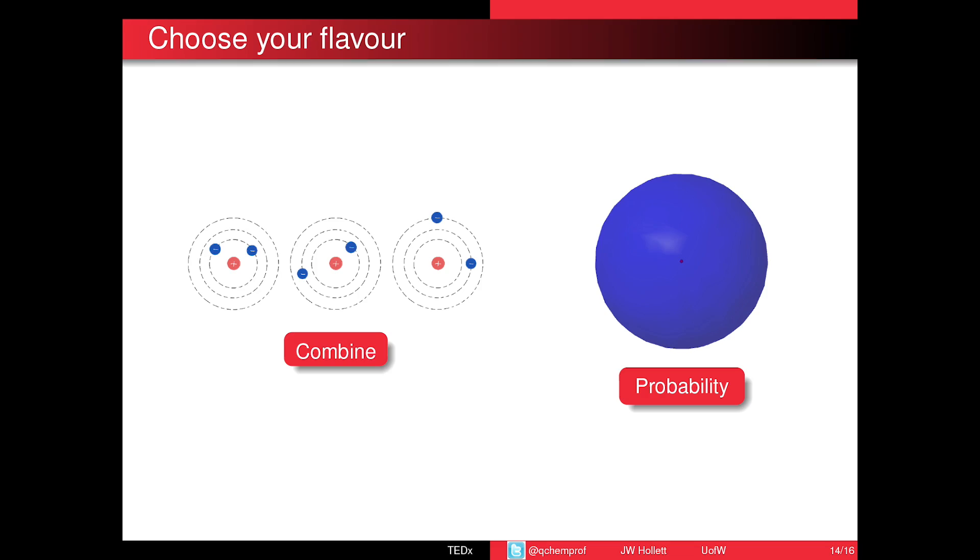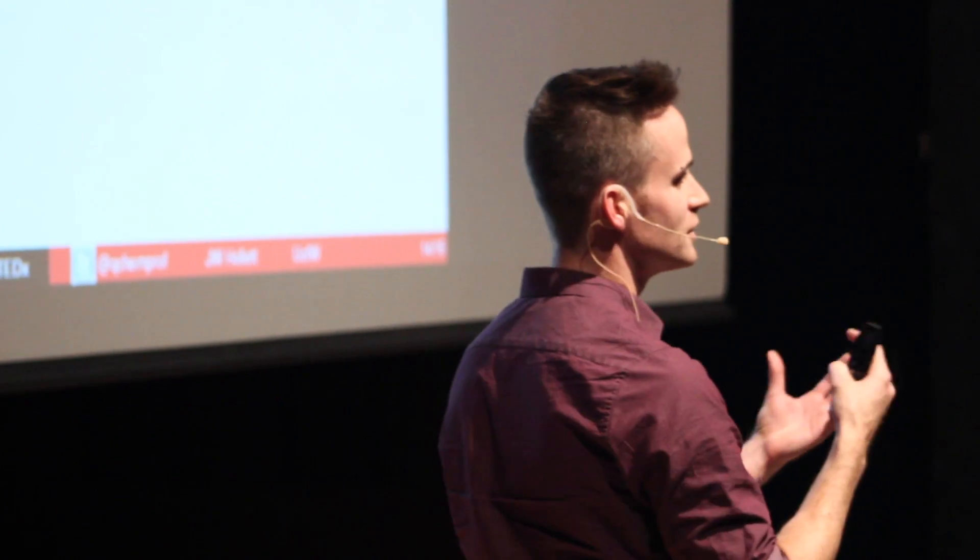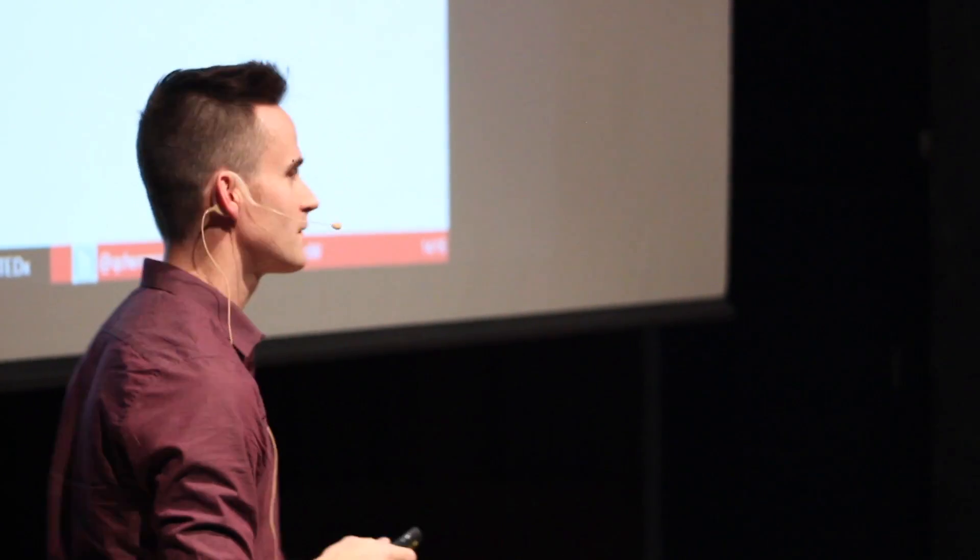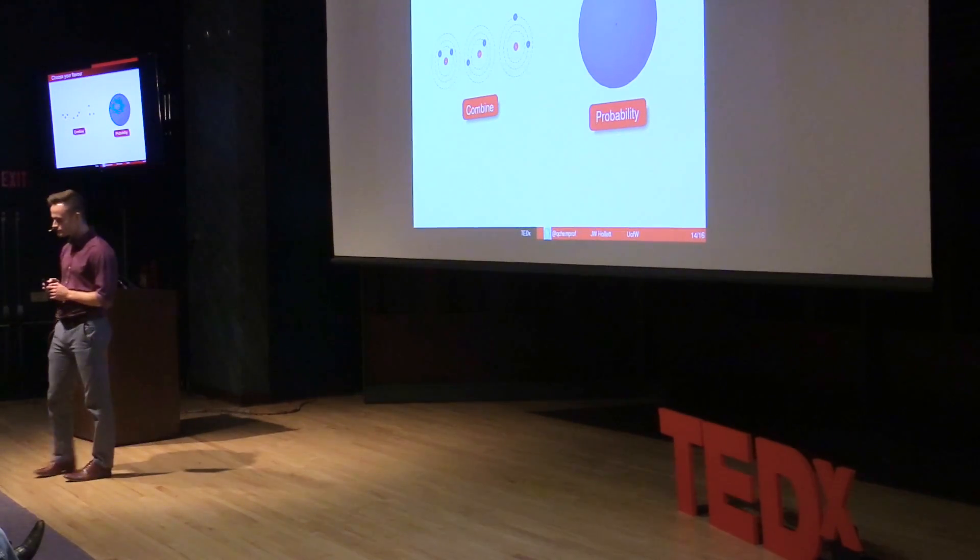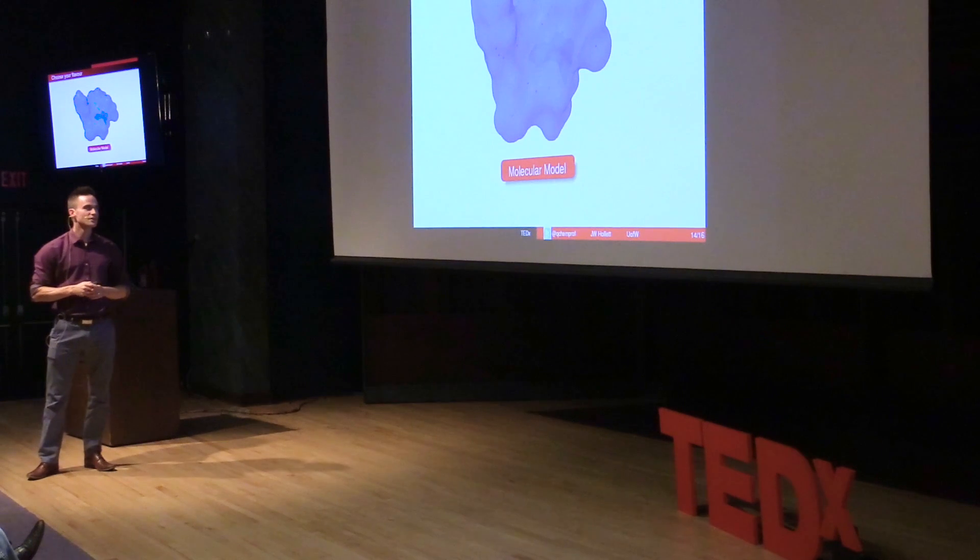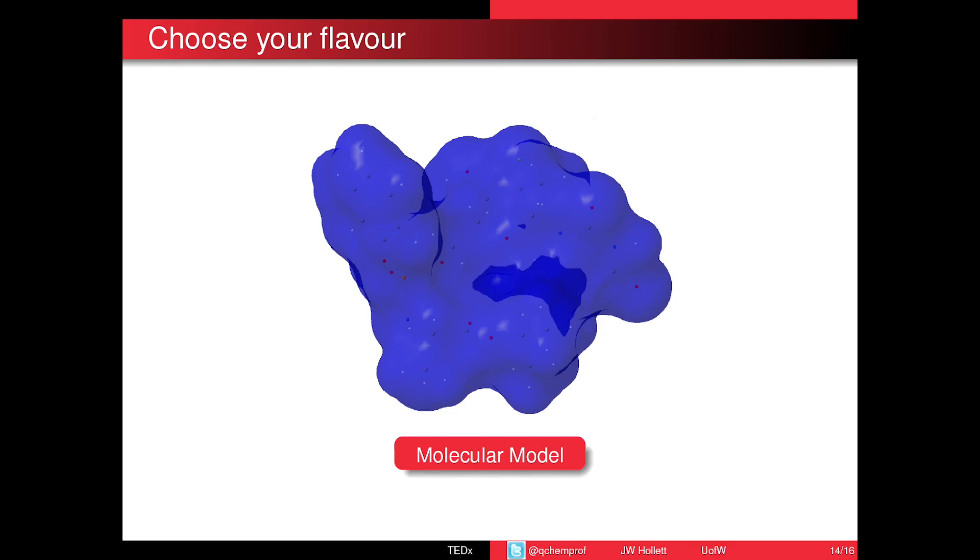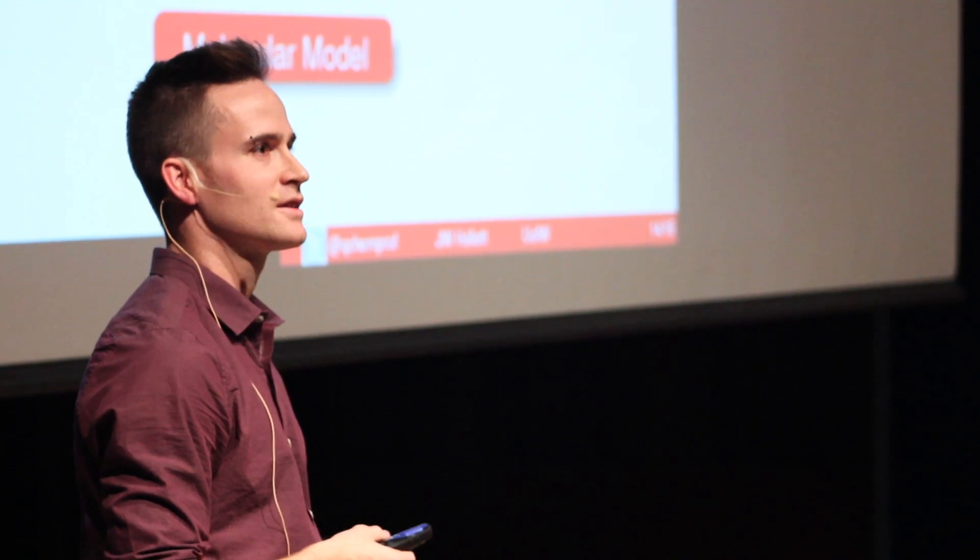Or we can take this probability cloud that I told you about, and from the shape of this probability cloud we're going to detect what's missing. And we get the relationship between what's missing and the shape of the probability cloud from some special examples that we pick. So whatever method we choose, it's going to determine how accurate our answer is going to be and how long it's going to take to calculate it on my computer.